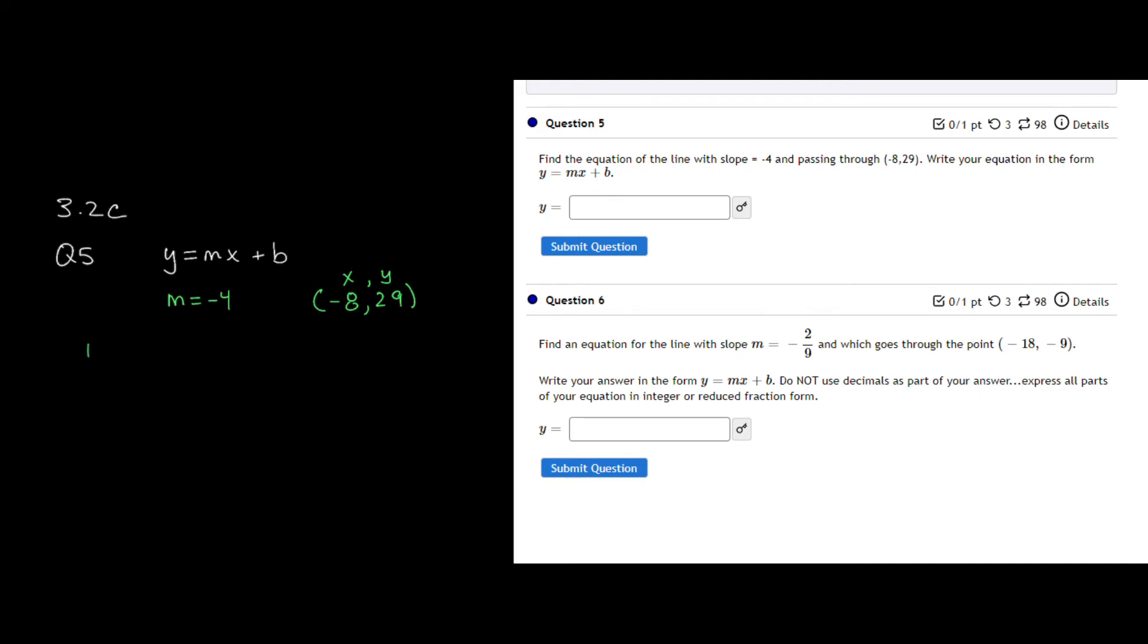And then we're going to go ahead and find b, our y-intercept, by plugging in the value for m and the point x and y. All right, so I know m is going to be negative 4. I know x is going to be negative 8. And my y is over here at 29.